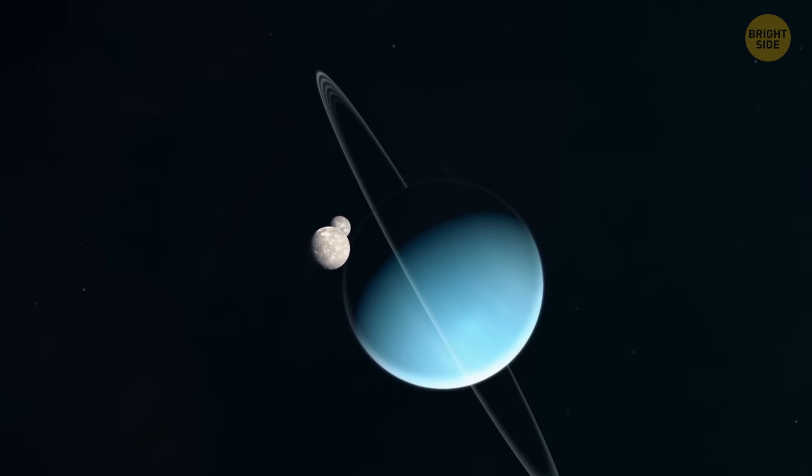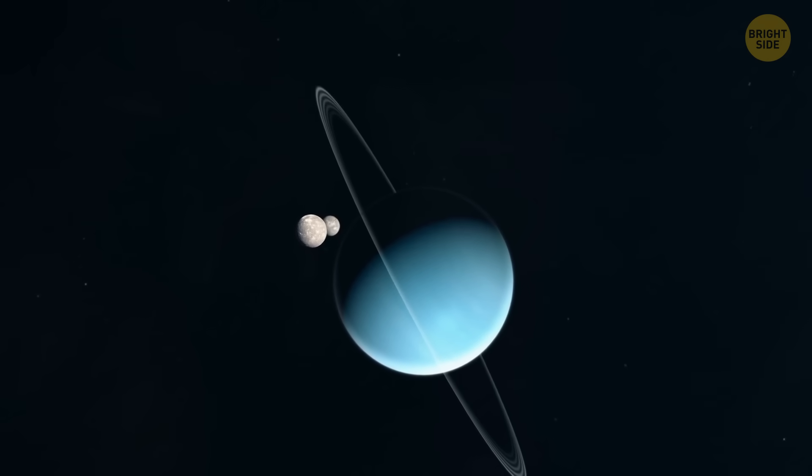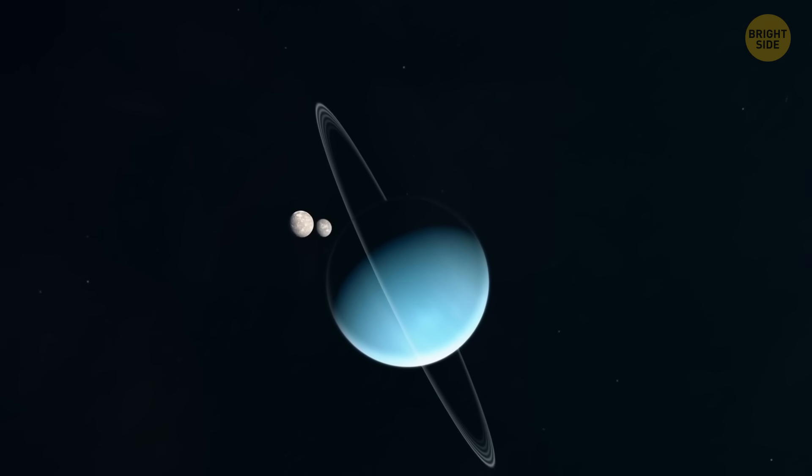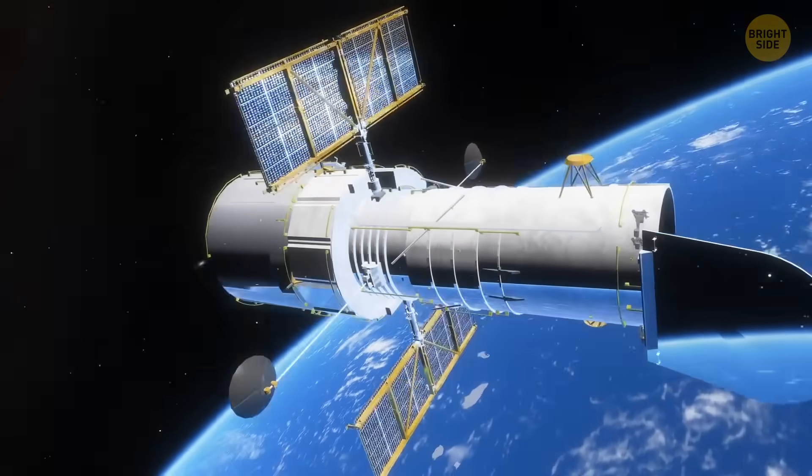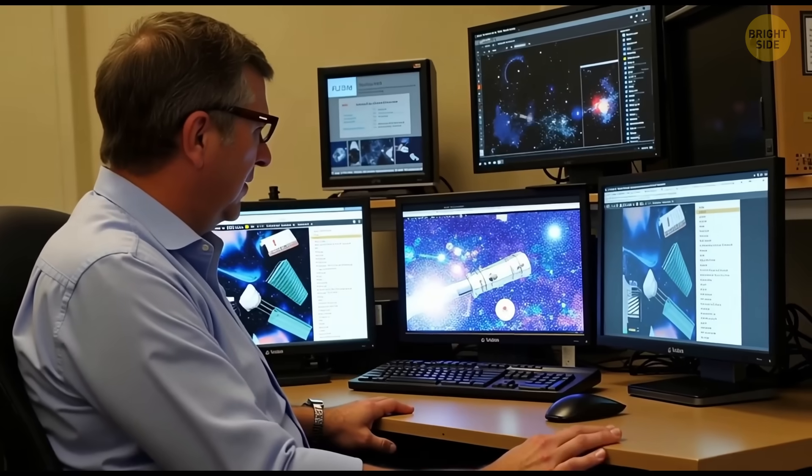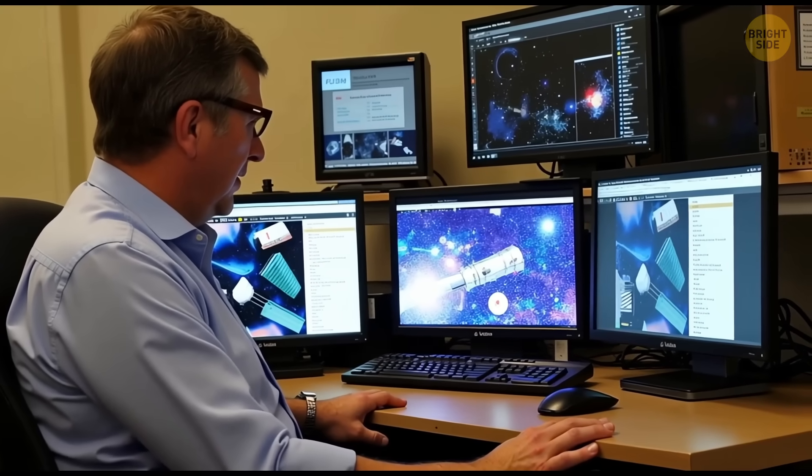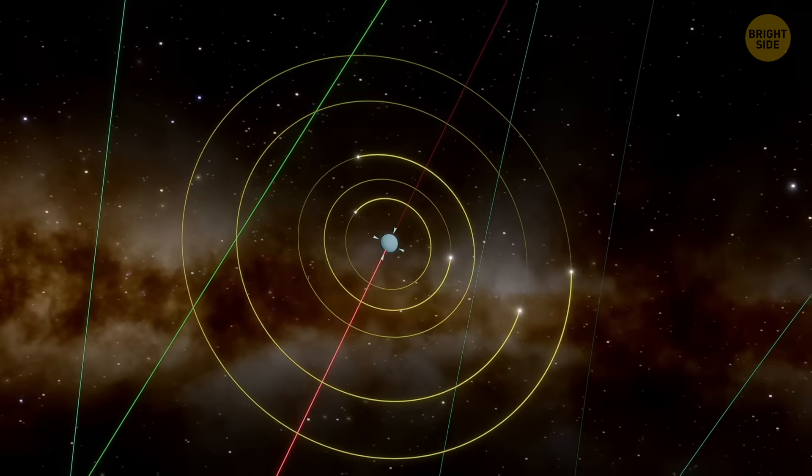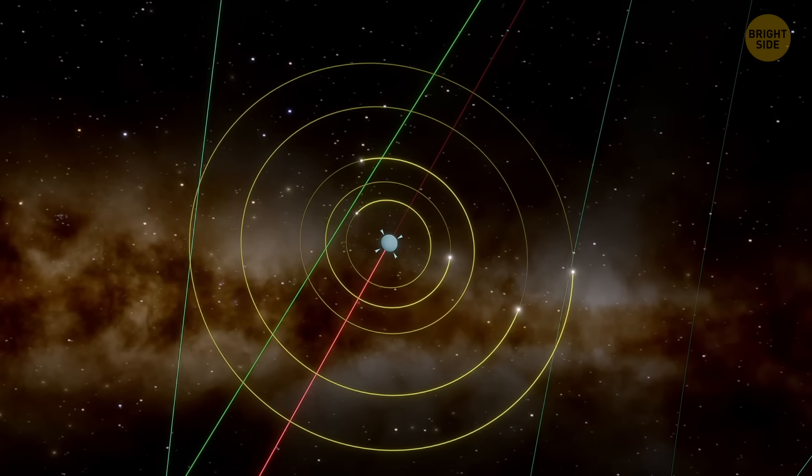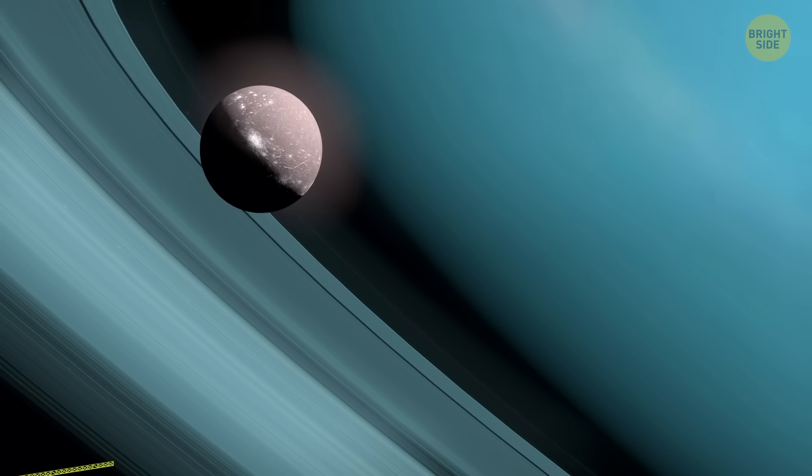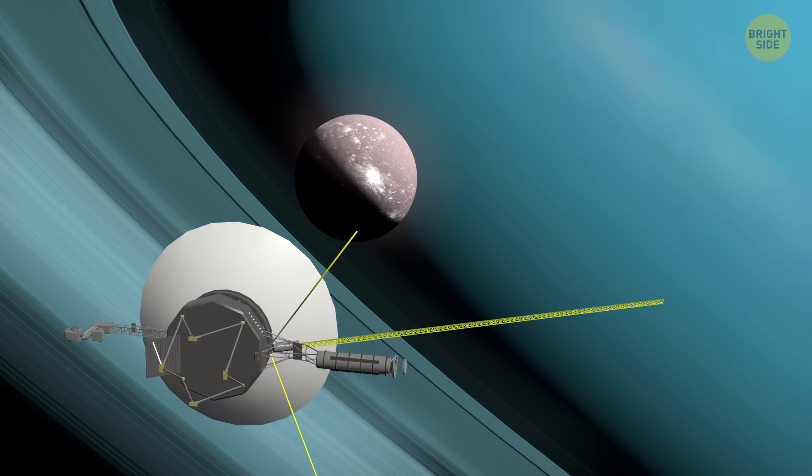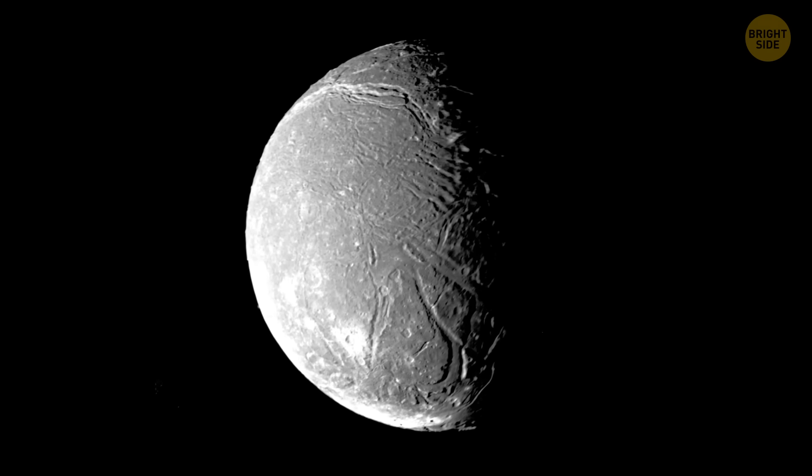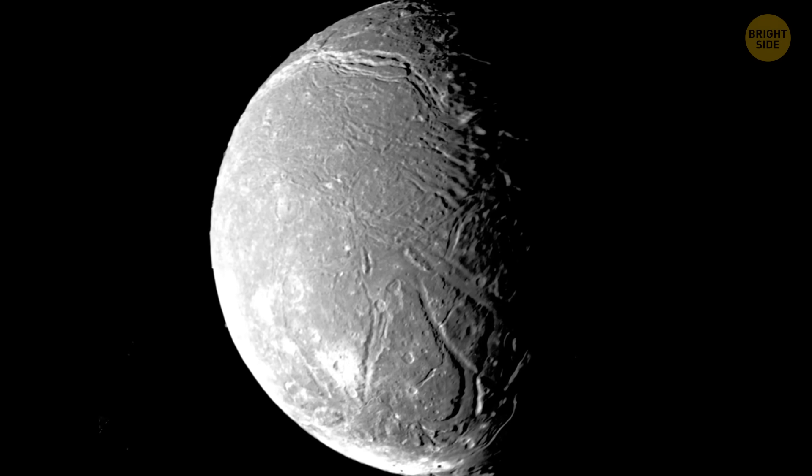Uranus is this pale blue gas giant way out there, the loner planet that never gets much attention. But recently, scientists turned their telescopes and computer models toward one of Uranus's 29 known moons, Ariel. Compared to its sisters and brothers, Ariel's got quite a unique personality. When the Voyager 2 spacecraft flew by in 1986, it caught some photos showing an oddly smooth surface peppered with craters, fractures, and valleys.